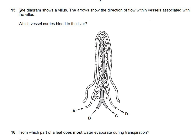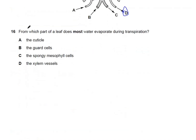Question 15: a diagram shows a villus with arrows indicating direction of blood flow. Which vessel carries blood to the liver? Vessels A and B are cancelled as they flow inward. Vessel D has a network indicating it carries blood to the liver — this must be the portal vein. The answer is D.